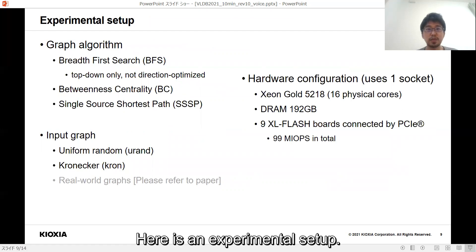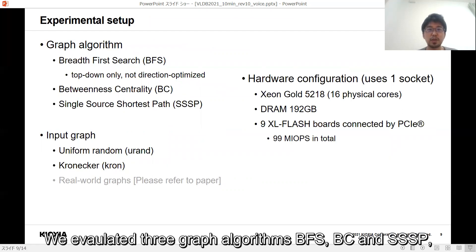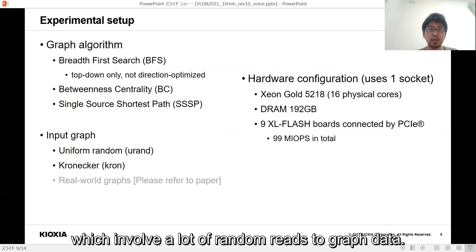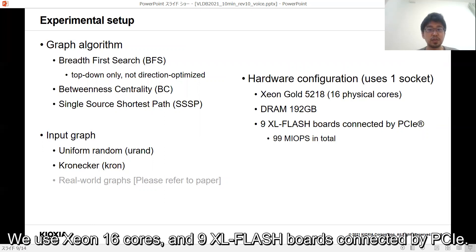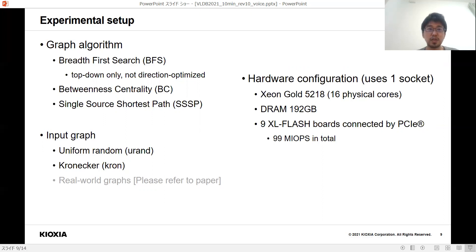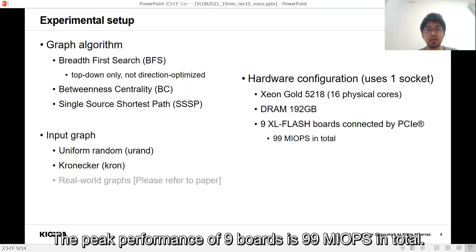Here is an experimental setup. We evaluated three graph algorithms: BFS, BC, and SSSP, which involve a lot of random reads to graph data. We will show the results of synthetic graphs, Uniform Random and Kronecker graph in this talk. We use 16 cores and nine XL-FLASH boards connected by PCIe. The peak performance of nine boards is 99 million IOPS in total.